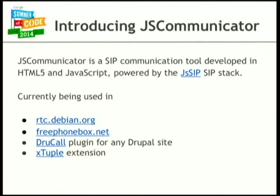JSCommunicator is what I've been working on. It's a web app used for SIP communication, developed entirely in HTML5 and JavaScript, using the JSSIP stack - a JavaScript library that implements the SIP WebSocket transport. To use JSCommunicator, you need a server with a SIP proxy that supports WebSocket transportation, for example Kamailio, which is easy to install on any Debian system.